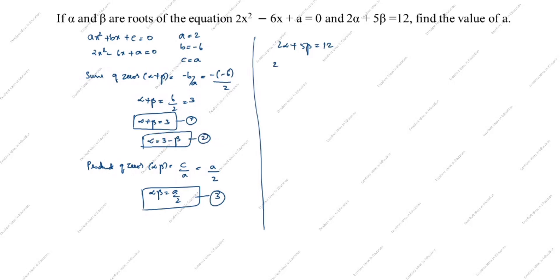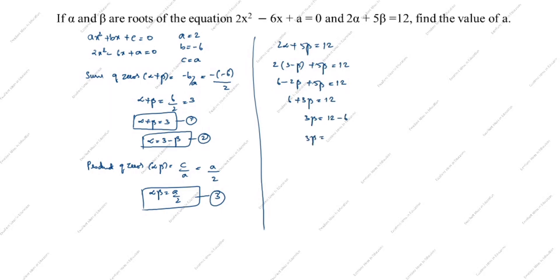Substituting: 2 times (3 minus beta) plus 5 beta equals 12. Multiplying inside the bracket: 6 minus 2 beta plus 5 beta equals 12. Combining like terms: 6 plus 3 beta equals 12. So 3 beta equals 12 minus 6, giving 3 beta equals 6, therefore beta equals 2.